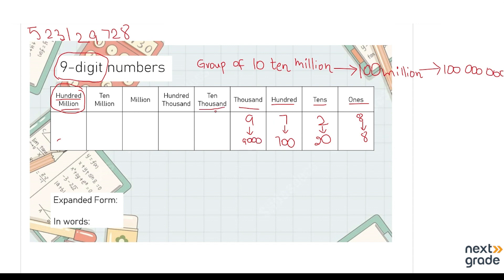Next, at the 10,000 place value we have the digit 2, and when we expand it we write 20,000. Then at the 100,000 place value we have 1, so we write it as 100,000.